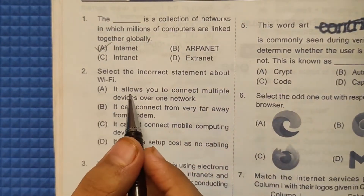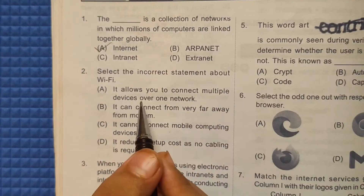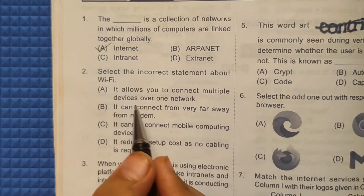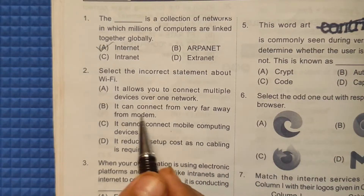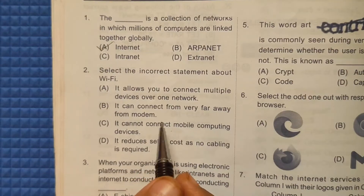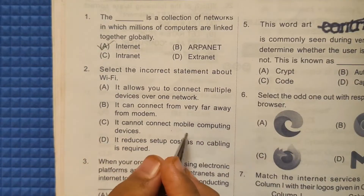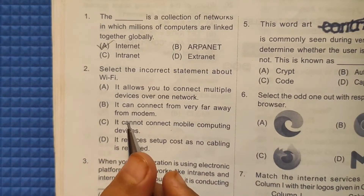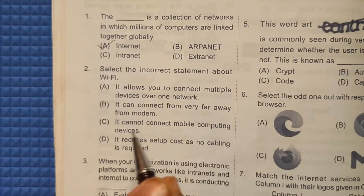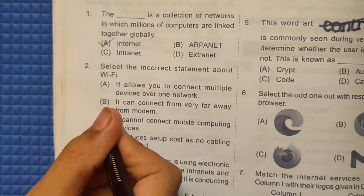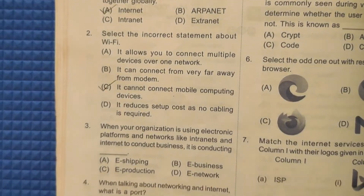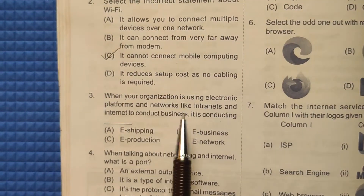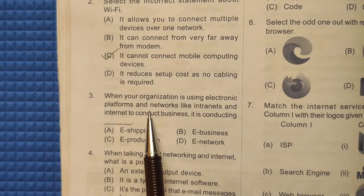Second question: Select the incorrect statement about Wi-Fi. Option A: It allows you to connect multiple devices over one network — this is correct. Option B: It can connect from very far away from the modem — this is also correct. Option C: It cannot connect mobile computing devices — this is incorrect, because Wi-Fi can connect to mobile computing devices. So the correct answer is option C.